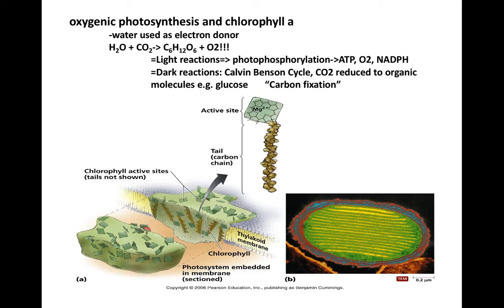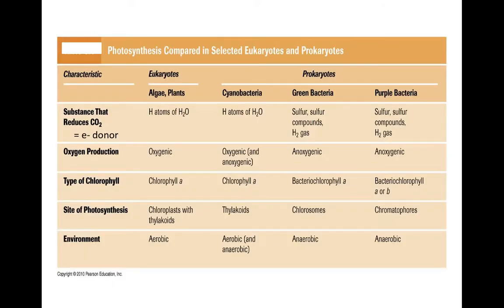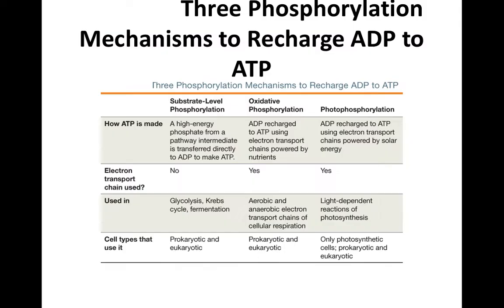Unfortunately, we don't have enough time to go through all of the different steps of oxygenic photosynthesis — it's just a fantastic process. Just knowing the difference between anoxygenic and oxygenic photosynthesis will be fine. This is a table comparing the different types of photosynthesis. Don't worry about the photophosphorylation — this is a type of ATP production that occurs in photosynthesis.